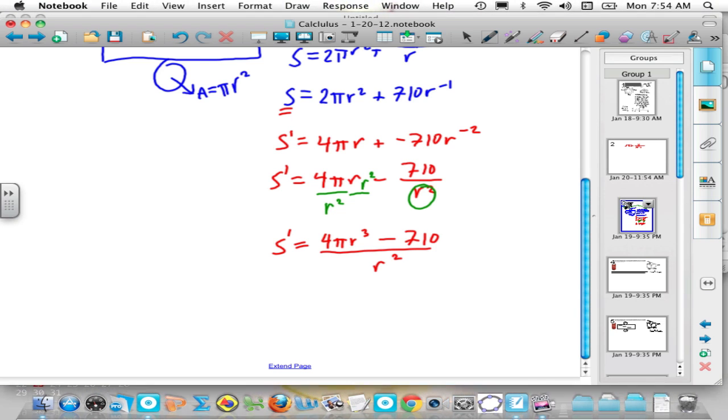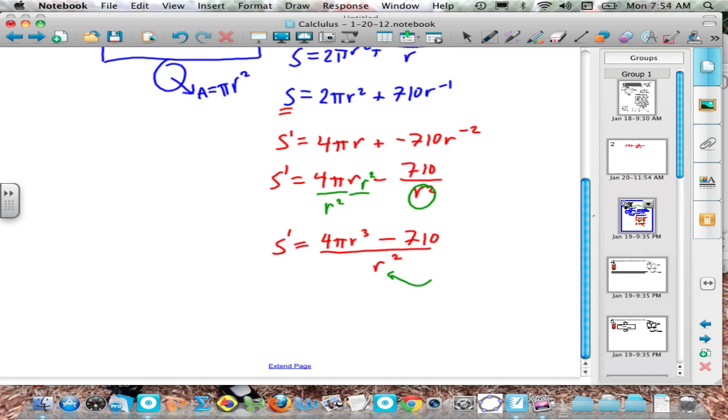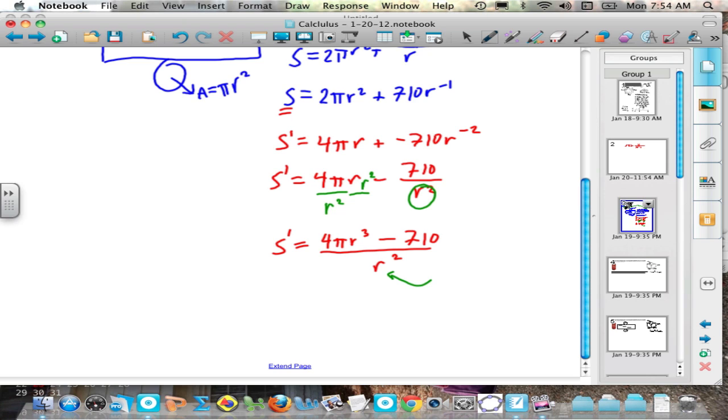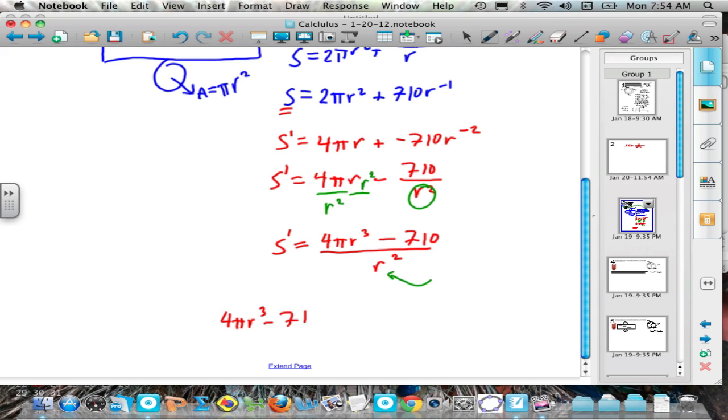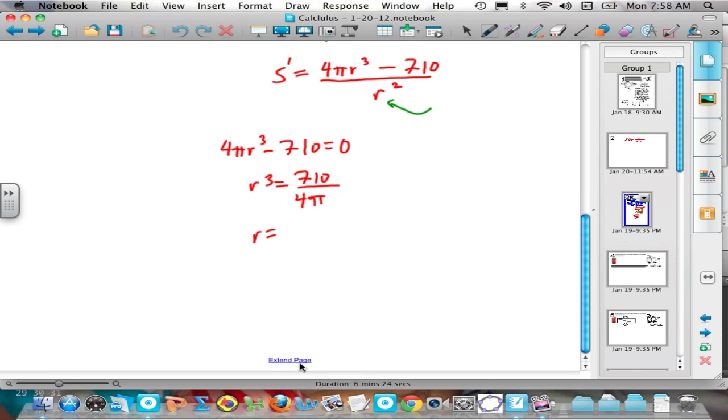Thinking about critical values of this, the denominator could be 0 if r is 0. So technically, r equals 0 is a critical value. But if you think about it, it doesn't really make sense for the radius of this can to be 0. And that leaves the possibility that the numerator is 0. So what I'm going to do is take 4 pi r cubed minus 710 and set that equal to 0. And what that leaves is r cubed is 710 over 4 pi. This makes r equal to the cubed root of 710 over 4 pi.